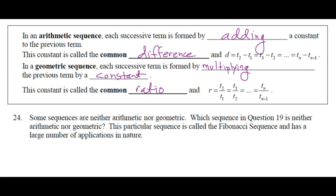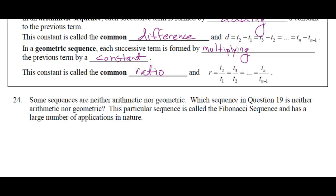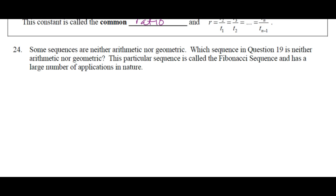You may find the common ratio by taking any term and dividing it by the preceding term. You're going to recognize it by looking at it and saying, hey, if I multiply this by 2 and that by 2 and that by 2, then I generate the sequence. Some sequences are neither arithmetic nor geometric. The sequence in question 19 is neither arithmetic nor geometric. G. This previous sequence is called the Fibonacci sequence and has a large number of applications in nature.